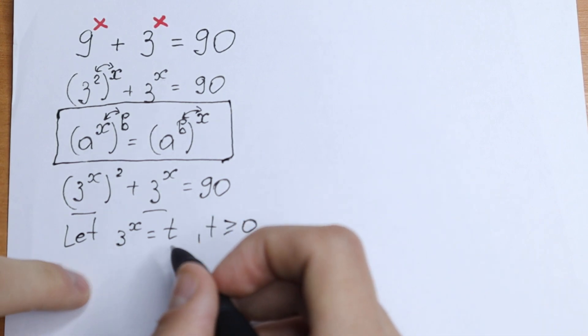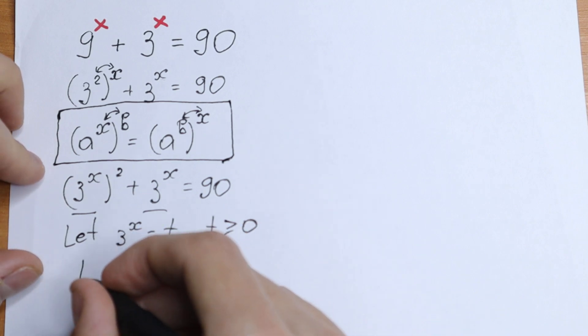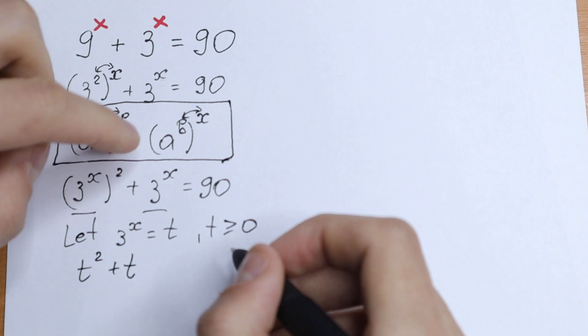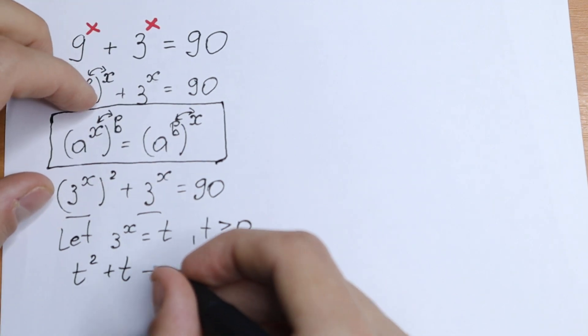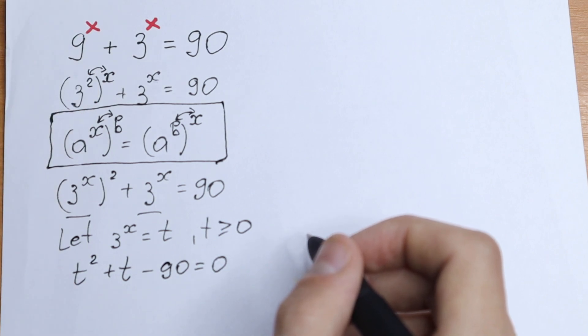Let's create a quadratic equation. With this t we will have not t but t squared because we have second power right here. We will have t squared plus t and I bring this 90 on the left. Minus 90 equal to 0. And take a look.